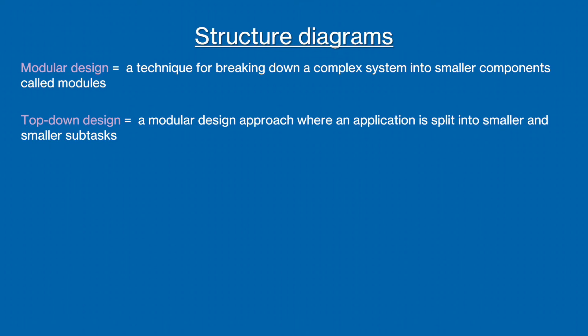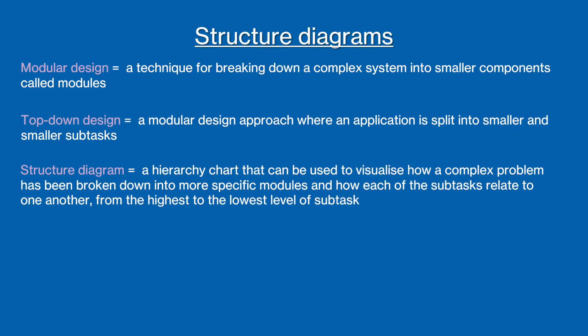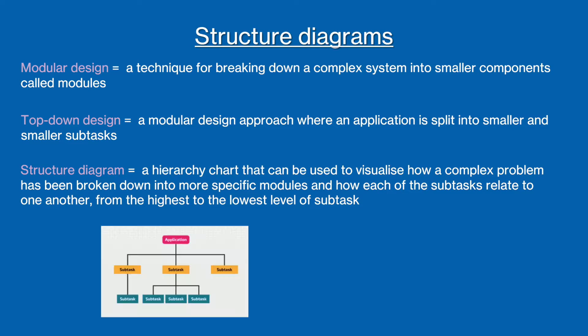Top-down design, also known as stepwise refinement, is a modular programming technique where a program is split into smaller and smaller sub-programs until each can be represented as a self-contained module. Once the program has been decomposed, structure diagrams, also known as hierarchy charts, are used to visualize how the sub-tasks relate to one another. At the top of the diagram is the main program, at the next level is the sub-problems of the main task, and at the next level is the sub-problems of these sub-problems, and so on.